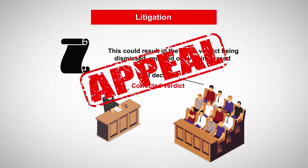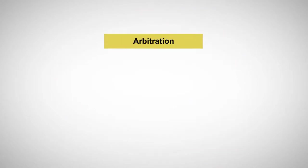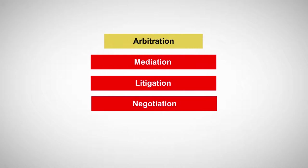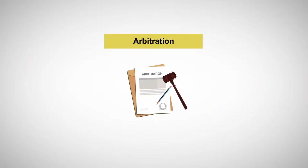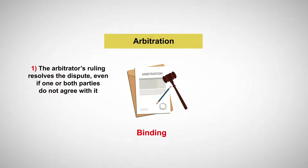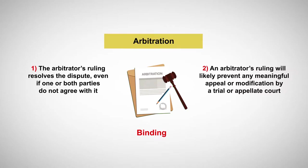Now we'll approach arbitration, which is an alternative to these three methods of settling a dispute. Unlike mediations or negotiations, arbitrations are binding on the parties in at least two ways. First, the arbitrator's ruling resolves the dispute, even if one or both parties do not agree with it. Second, an arbitrator's ruling will likely prevent any meaningful appeal or modification by a trial or appellate court.